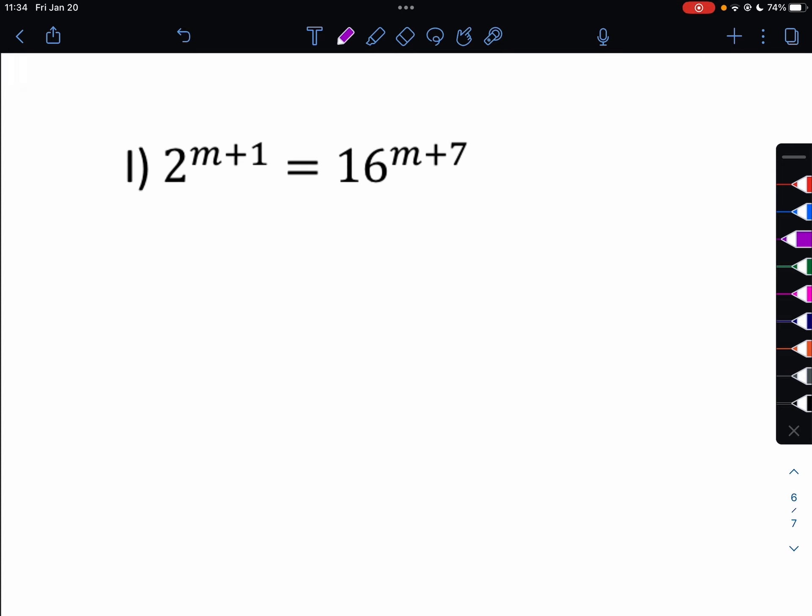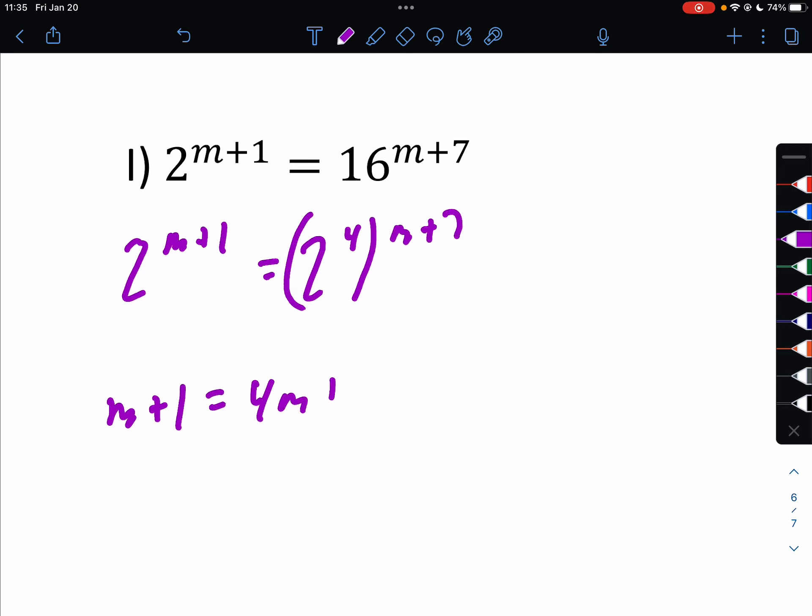Letter I. We can write these as powers of 2. So m plus 1 equals 4m plus 28. So m would equal negative 9.